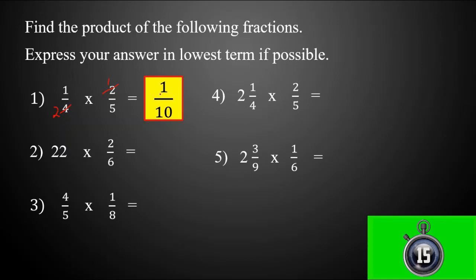For number two: twenty-two times two over six. We can use the cancellation method — divide twenty-two by two, giving eleven, and six by two, giving three. Multiply eleven times two, which equals twenty-two, then copy the denominator three. Twenty-two divided by three equals seven with a remainder of one, so our final answer is seven and one-third. For the remaining problems, you may write your answers in the comment section so I can check if you got the correct answer.